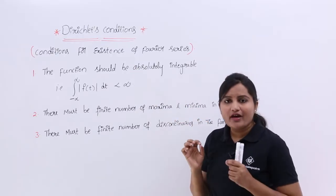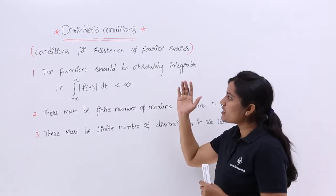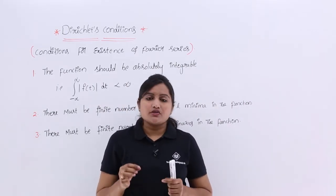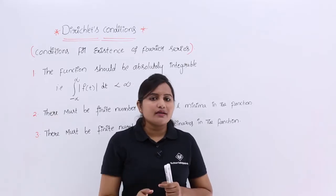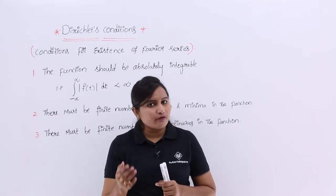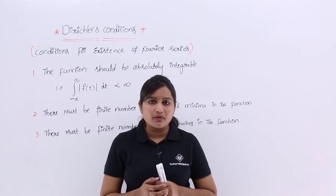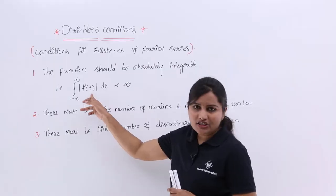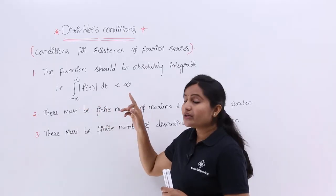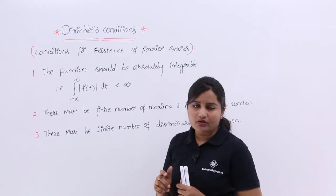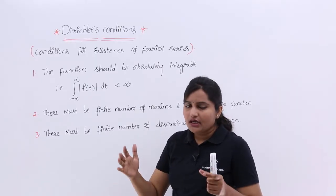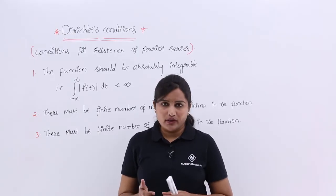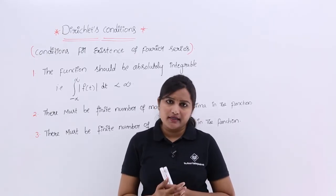The first, very important condition is: the function should be absolutely integrable. Whatever signal you want to represent in Fourier series, or if you want to consider a Fourier or Laplace transform, that signal must be absolutely integrable. That means if you evaluate the integral of that signal, you must get a finite value, not an infinite value. If you get a finite value, then that signal is absolutely integrable.